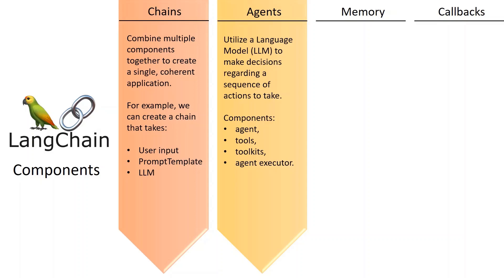Agents consist of several key components, including the agent itself, tools, toolkits, and the agent executor. The agent, as a class, assumes the responsibility of determining the next step to take. This decision-making process is facilitated by a language model and a prompt. In LLMChain, various types of agents are available, with the most commonly used ones being ZeroShot React, Structured Input React, and OpenAI Functions. We will delve deeper into these agent types during practical exercises.